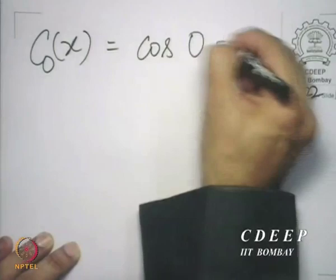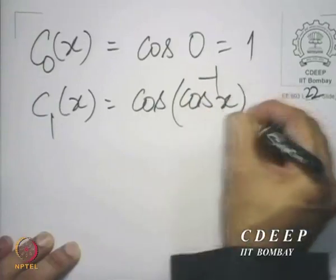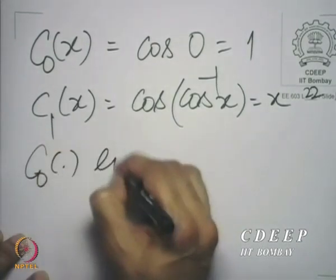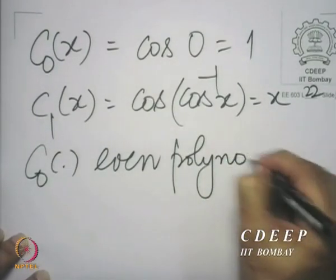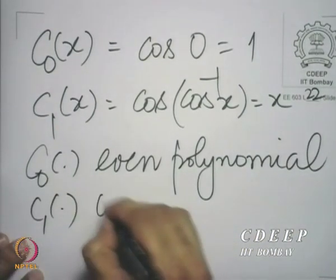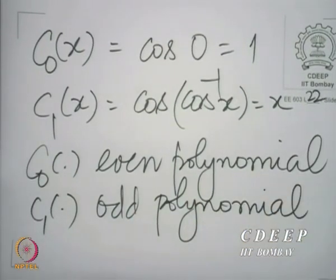Let us write down the expression for a few values of integer n. For N=0 and N=1, those are easy. C0(x) is cos(0), which is 1. C1(x) is cos(cos⁻¹(x)), which is simply x. So as you see, both C0 and C1 are polynomials. C0 is an even polynomial — a polynomial with only even powers of the argument — and C1 is an odd polynomial, with only odd powers of the argument.